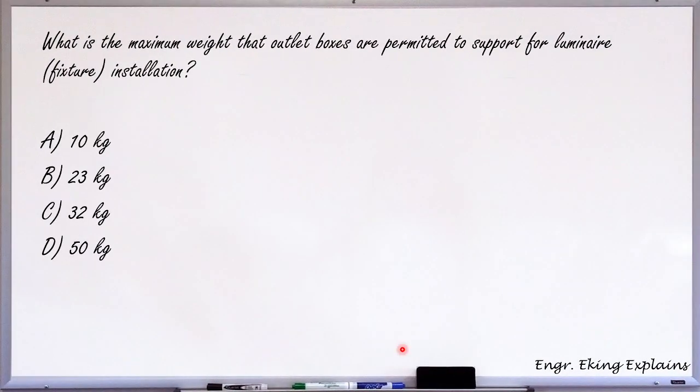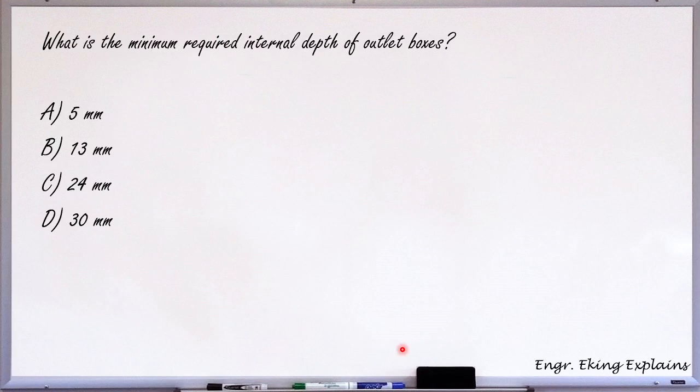what is the maximum weight that outlet boxes are permitted to support for luminaire fixture installation? Okay, so the correct answer is letter B, 23 kilograms. Next,